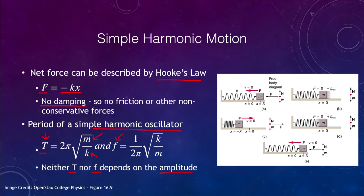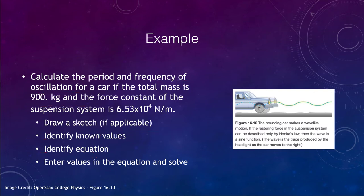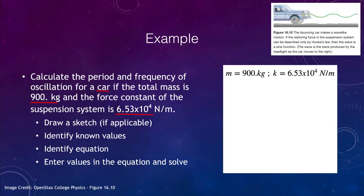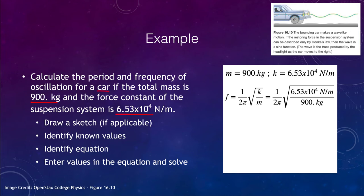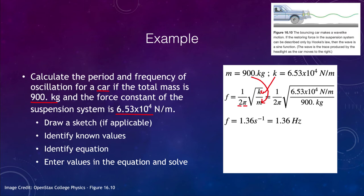Let's look at an example: calculate the period and frequency of oscillation for a car if the total mass is 900 kilograms and the force constant in the suspension system is 6.53 times 10 to the fourth newtons per meter. We have a diagram of a car, and we know the mass and the force constant — those are the only two things we need, along with two and pi, to calculate the frequency. Putting those values in, we find that the frequency is 1.36 per second, or 1.36 hertz.